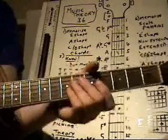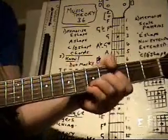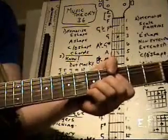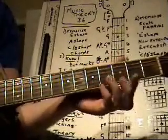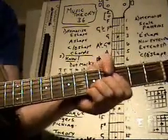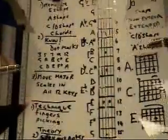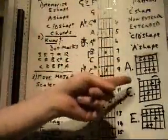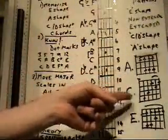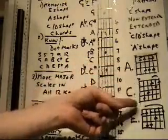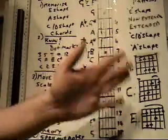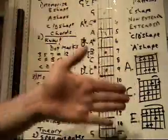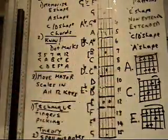Here we go. Thanks to all your comments. So the three shapes — the A, the C, and the E. A shape, C shape, E shape — bar chords. Enough said.